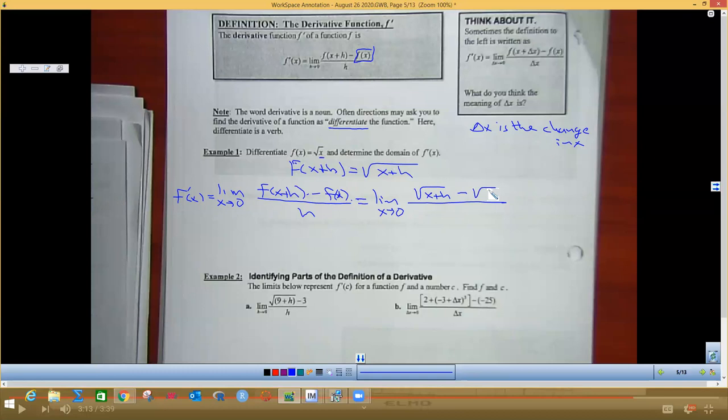So if I plug 0 in here and 0 in here, the numerator goes to 0, the denominator goes to 0, and now I've got to use those rules we learned during unit 1. So I'm going to multiply this by the conjugate because I have a binomial with a radical.